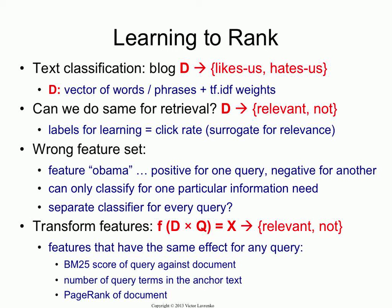We've actually seen a bunch of them. BM25 score, TF-IDF weighted sum — that's a feature. It's a number. You take a document and query, compute a TF-IDF weighted sum, and use that number as a feature. We know it's a good retrieval function — better for some queries, worse for others, but in general pretty good. PageRank: great for some queries, totally wrong for others, but it's a feature that correlates with relevance. Anchor text: you take the query, count the number of query terms in the anchor text — that's another feature. Anything we've discussed up until this point in the course is potentially a feature you can include in X.